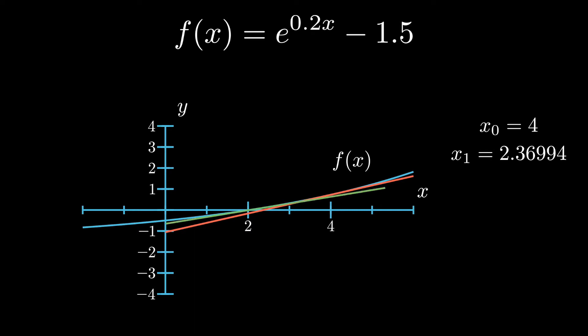We repeat the process again and the second tangent line intersects the x-axis at x2. We can see that with just two iterations in this case, we are quite close to the true solution of this equation.